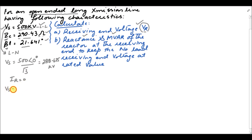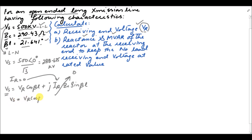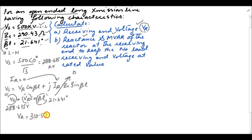From the sending-end voltage equation Vs = Vr·cos(βl) + jIr·Zc·sin(βl), with Ir = 0 the imaginary part vanishes and Vs = Vr·cos(βl). We know βl = 21.641° and Vs = 288.675 kV, so Vr = 288.675 / cos(21.641°) = 310.57 kV (phase value). Converting to line-to-line: Vr_LL = 310.57 × √3 = 537.9 kV.